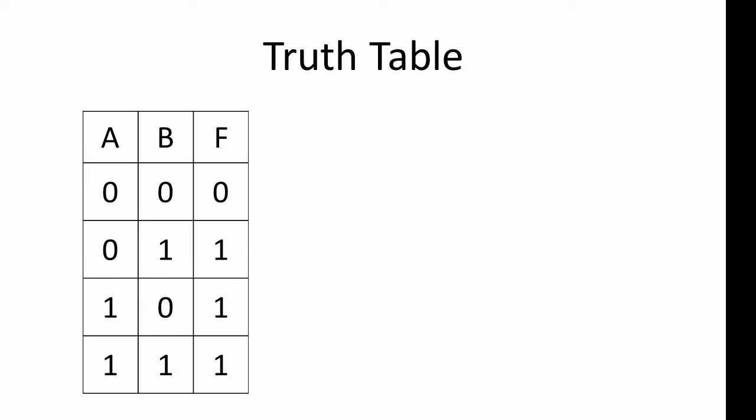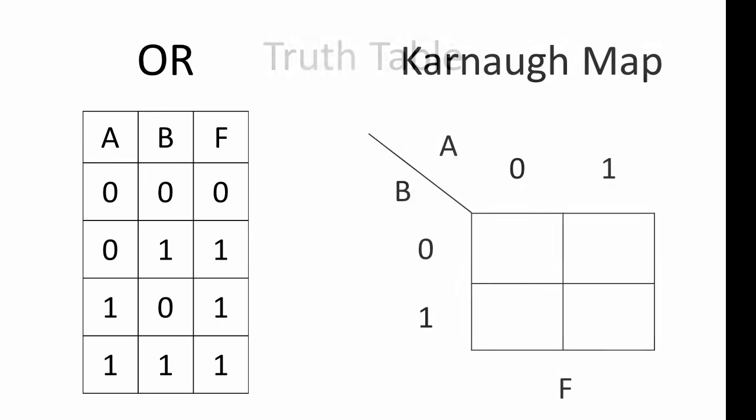Let's look at an example. Here's a simple truth table with two inputs, or two variables. You should recognise this as the truth table of an OR gate. Column F contains the output value for each combination of input values A and B. Strictly speaking, this is the truth table for any combination of logic gates that behave in the same way as an OR gate, so we could say that this is the truth table of an OR function — that's why we've called the output column F. To construct the corresponding K-map, we draw a grid with one square for each row in the truth table. The possible input values for A are used as column headings across the top, and those for B as row labels down the left-hand side. These input values will act like coordinates for the output values.